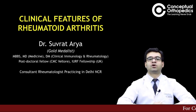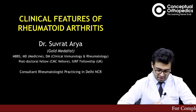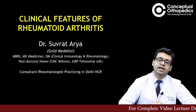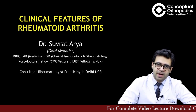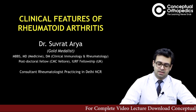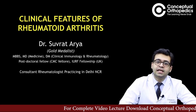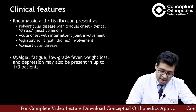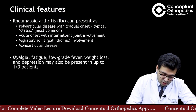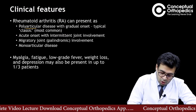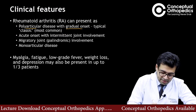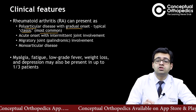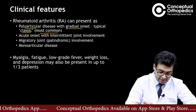Welcome again. I'm Dr. Suvrat Arya, consultant rheumatologist practicing in Delhi NCR. We have already discussed the introduction and pathogenesis of rheumatoid arthritis. Now let's see what are the clinical features of rheumatoid arthritis. Rheumatoid arthritis can present as polyarticular disease with a gradual onset — this is also known as classic RA, and it is the most common presentation.